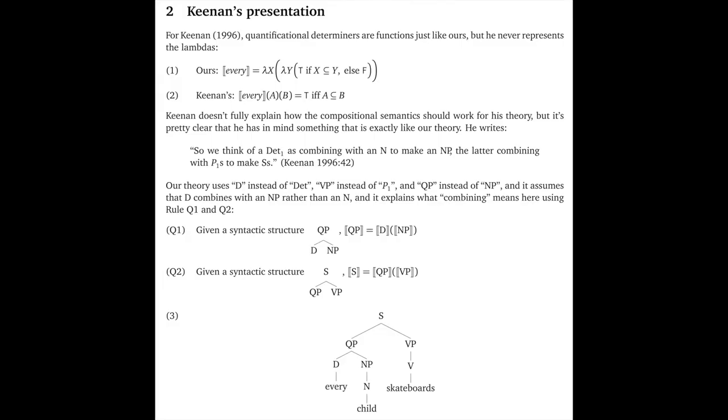Section two builds a bridge into Keenan's paper, and the core insight is that Keenan's framework is fundamentally the same as ours, but he's just somewhat less explicit about the functions he's talking about and how they combine. For example, consider our meaning for every given in one. This gets the restriction argument for slot x and the scope argument for slot y, and then it tests whether x is a subset of y, returning true or false on that basis. Keenan's version is in two, and the idea here is that he's saying that every denotes the function that, for all possible inputs a and b, returns true if a is a subset of b. So obviously, it's the same core meaning as ours, he's just been somewhat less explicit about how the variables get bound, and so the function itself is a bit more under the hood, as it were.